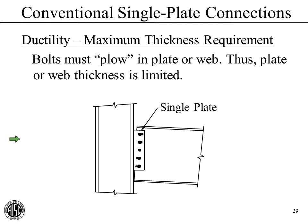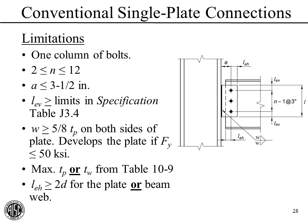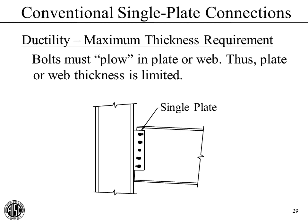How do we accomplish ductility? The last two requirements relate to satisfying ductility. The idea is to make the plate or web thin enough that the bolts will have significant bearing deformation in the thinner material—we call this plowing. The bolts need to be able to plow into the plate, as shown in this picture. As the beam rotates clockwise, the top bolt plows into and deforms the plate in high bearing deformation, and the bottom bolt plows in the other direction. We need to make the plate thin enough so this can happen—that's how we achieve ductility for the conventional single-plate connection.